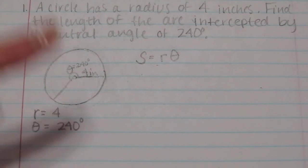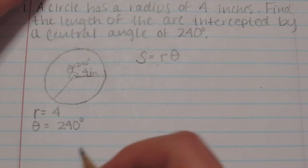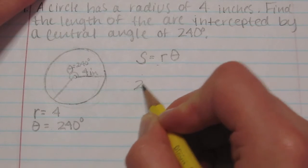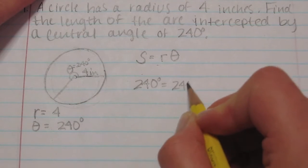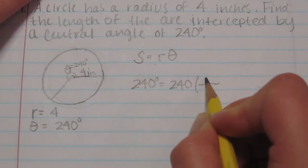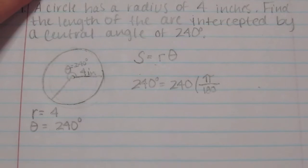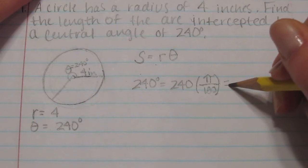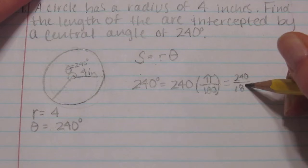Now like I said you can't use degrees you have to use radians. So to find radians you take your 240 degrees and you multiply that by pi over 180 degrees. So then you get 240 over 180 pi.